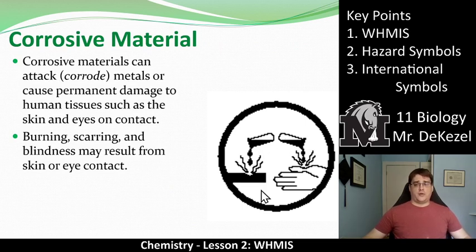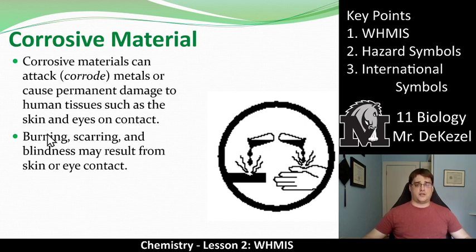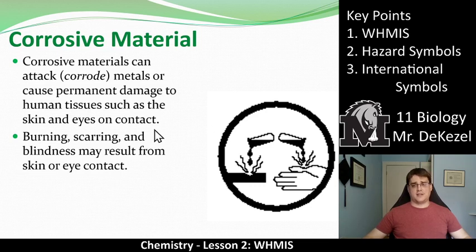We have corrosive material — you can see in the symbol a hand and material being burned away by acid. Corrosive material can attack metals or cause permanent damage to human tissues such as skin and eyes. Burning, scarring, and blindness may occur. Corrosive material is a fairly self-explanatory symbol.